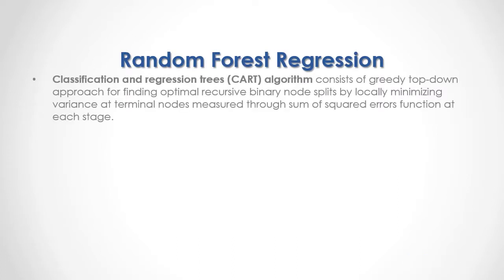The Classification and Regression Trees algorithm consists of a greedy top-down approach for finding optimal recursive binary node splits by locally minimizing variance at terminal nodes, measured through the sum of squared errors function at each stage. As a formula, we have the minimization of sum of squared errors equal to the sum of the difference between the output target feature data minus the terminal node output target feature mean, that result squared.